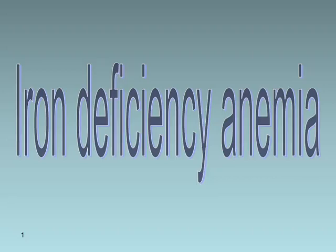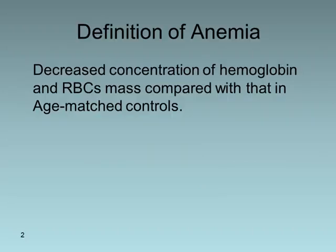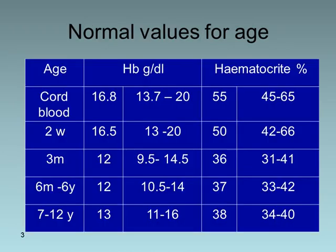Iron deficiency anemia: the definition of anemia is decreased concentration of hemoglobin and red cell mass compared with age-matched controls. To understand this, we need to know the normal values for different age groups.